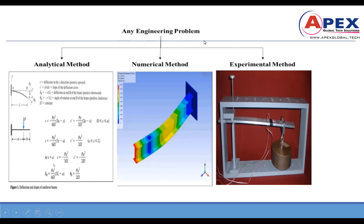We can solve any engineering problem in mechanical engineering using three methods: analytical, numerical, and experimental. In the analytical method, we solve problems using equations. One disadvantage of the analytical method is that it is very difficult to handle complex geometry.